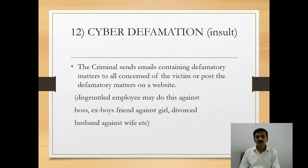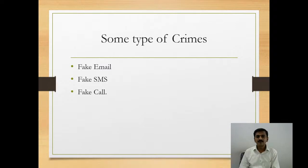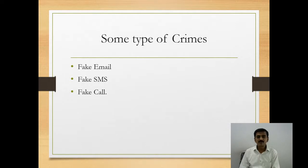The next category of crime involves fake emails, fake SMS, and fake calls. By using your email ID, someone can send mail to others pretending to be you. Similarly, by using your mobile number, someone can send SMS or make calls to another person pretending to be you. There are websites available on the internet through which a criminal can directly send an SMS or make a call using your mobile number. These are the different categories of cybercrimes.